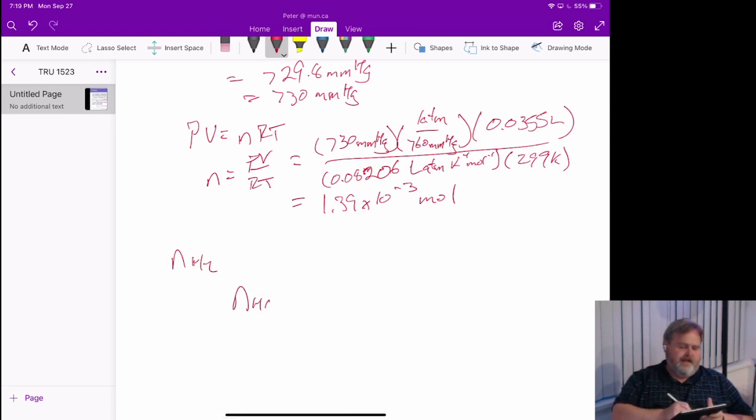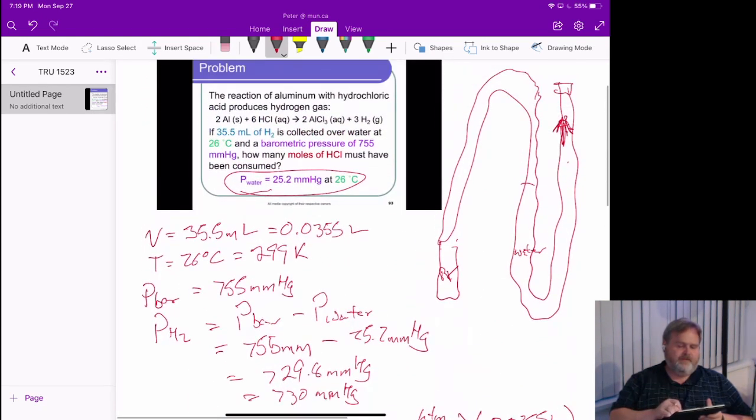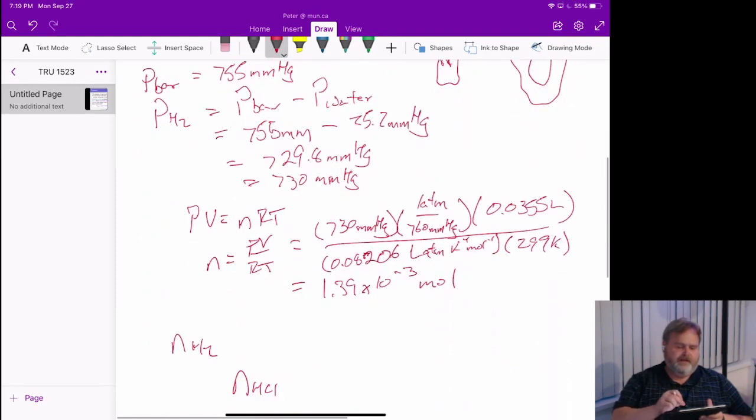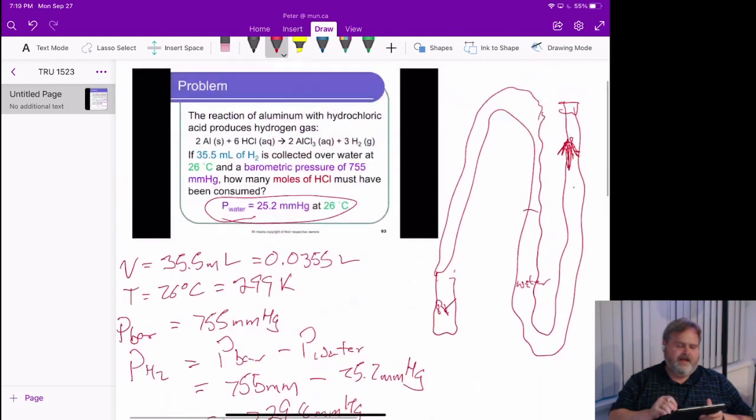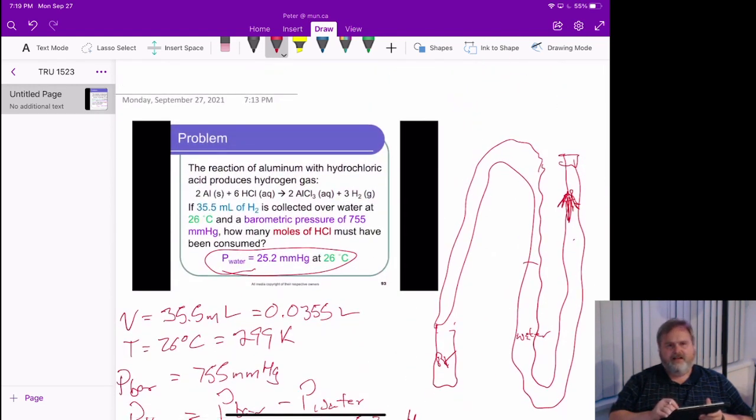The number of moles of HCl, as we see in our balanced equation, is going to be connected to our number of moles of H2, in that we consume 6 HCl for every 3 H2 we make.